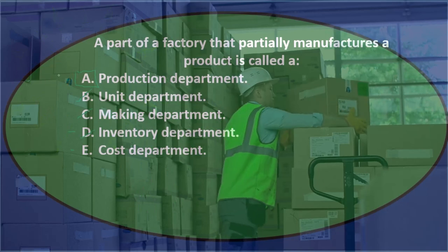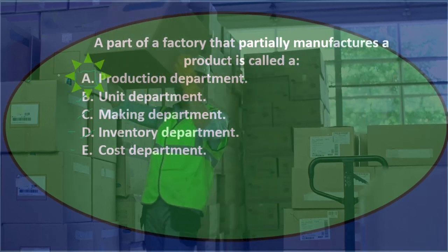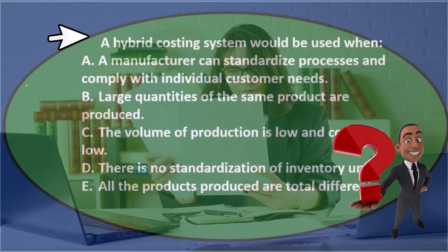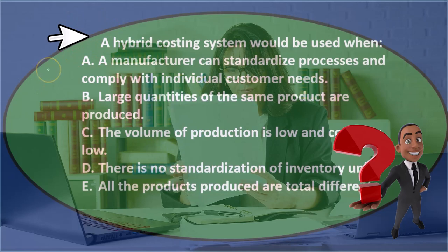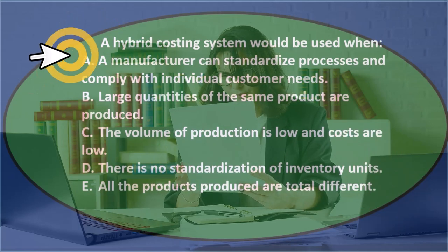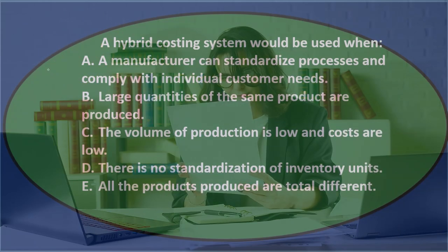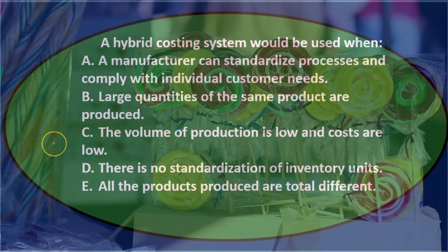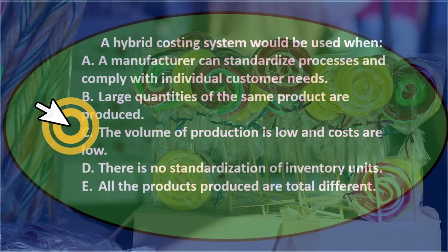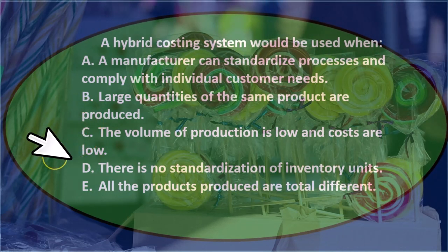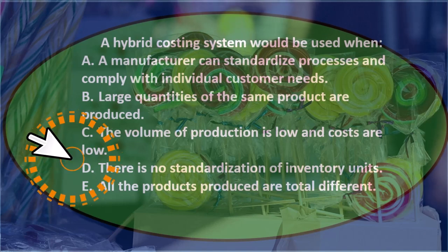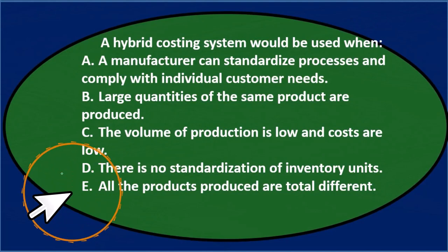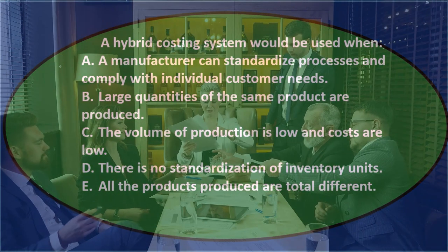Next question: a hybrid costing system would be used when — A) a manufacturer can standardize processes and comply with individual customer needs, B) large quantities of the same product are produced, C) the volume of production is low and costs are low, D) there is no standardization of inventory units, or E) all the products produced are totally different.